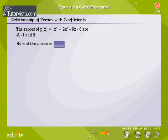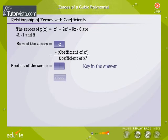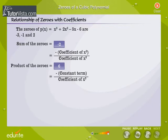Find the sum of the zeros — key in the answer. Find the product of the zeros — key in the answer. Find the sum of the product of the zeros taken two at a time — key in the values.